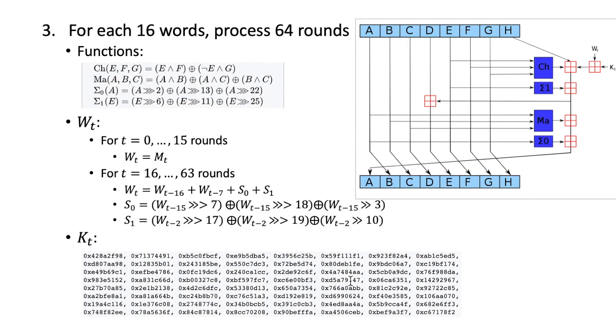Now we're going to use these buffers to process the message. For each 16 words we're going to process 64 rounds, and for each round the operations will be like that in this picture here. We have the eight buffers, so we already initialized it.